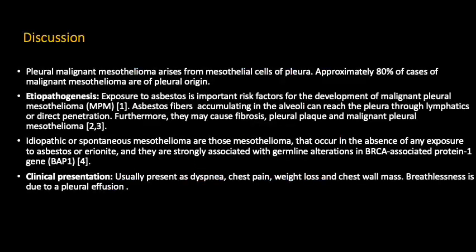Pleural malignant mesotheliomas arise from the mesothelial cells of the pleura. Approximately 80% are of pleural origin and the rest could be peritoneal. The most important risk factor is asbestos exposure. These tumors can also be idiopathic or spontaneous, and there may be germline alteration in the BAP1 gene. Clinical presentation includes dyspnea, chest pain, weight loss, or as in our case, a chest wall mass — breathlessness being due to pleural effusion.